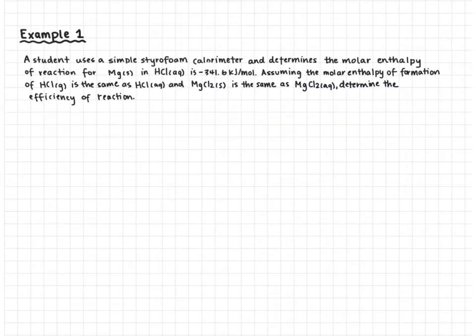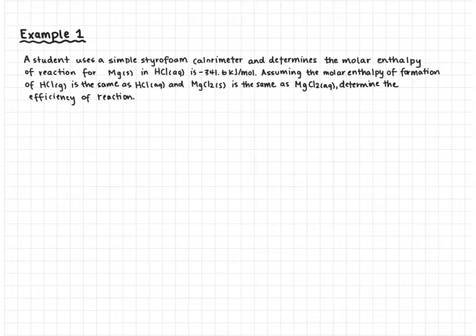Our first example: a student uses a simple styrofoam calorimeter and determines the molar enthalpy of reaction for solid magnesium and hydrochloric acid is negative 341.6 kJ per mole. Assuming the molar enthalpy of formation of HCl gas is the same as HCl aqueous, and the molar enthalpy of formation of MgCl₂ solid is the same as MgCl₂ aqueous, determine the efficiency of reaction. These assumptions allow us to use the numbers in our chemistry 30 data booklet.